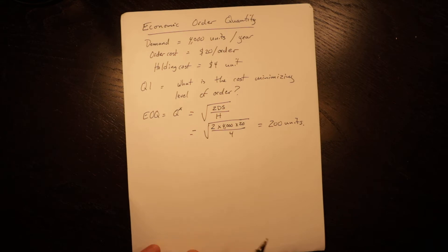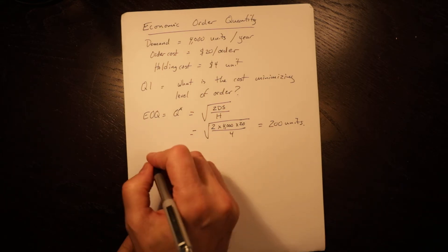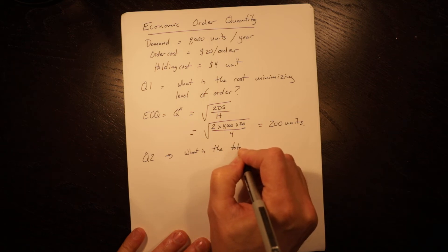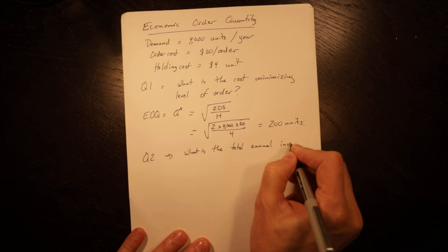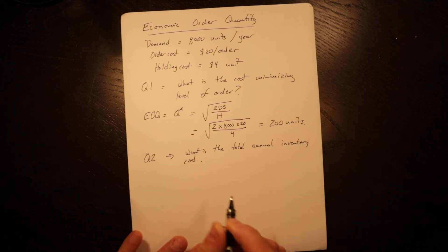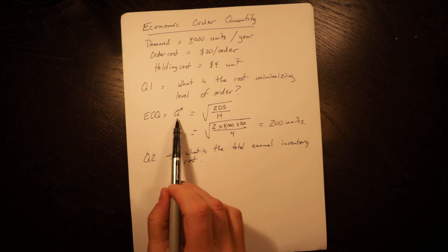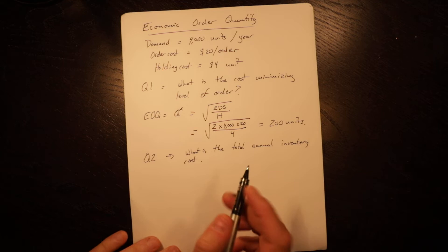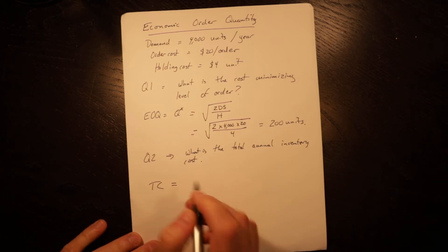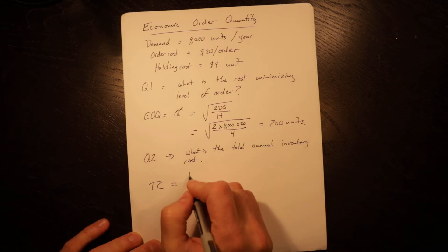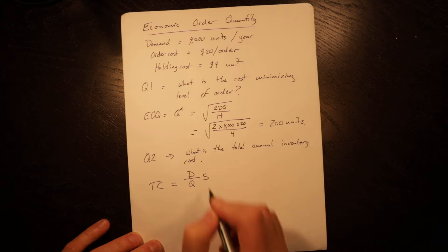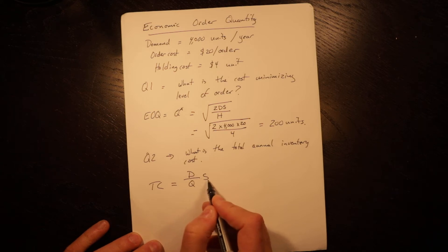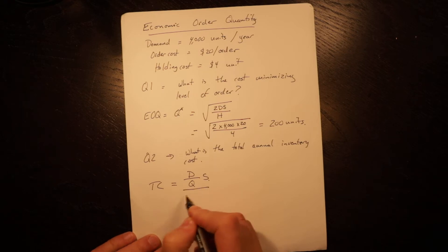The next question is: what is the total annual inventory cost? The EOQ gives you the order quantity that exactly balances holding cost with setup cost. Total cost is equal to demand over order quantity times setup cost — demand over order quantity gives you the number of orders placed, times the setup cost per order, giving you total setup costs.